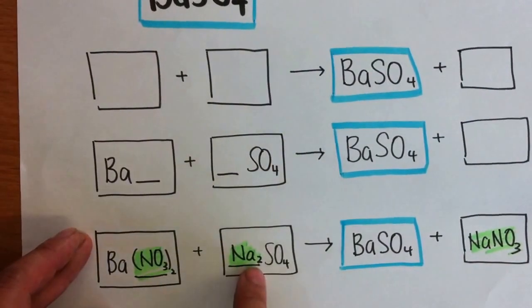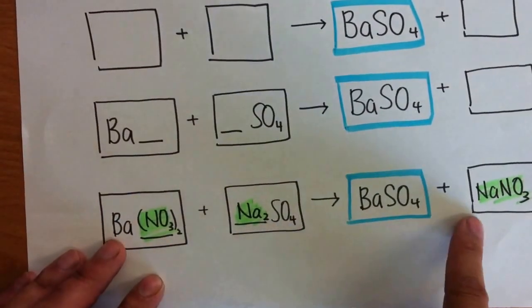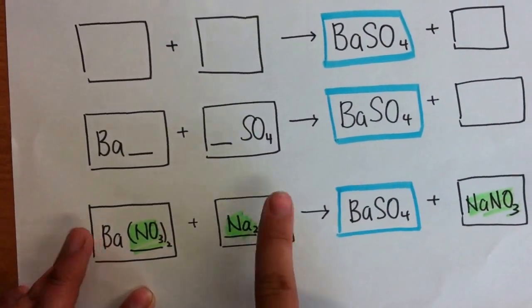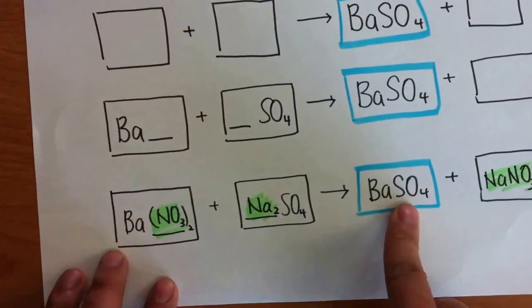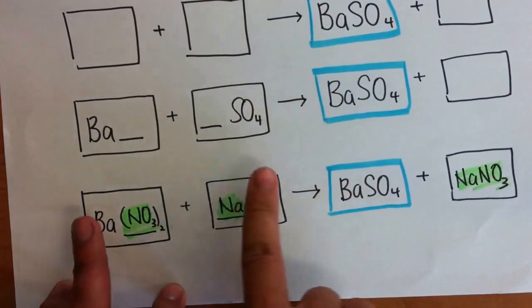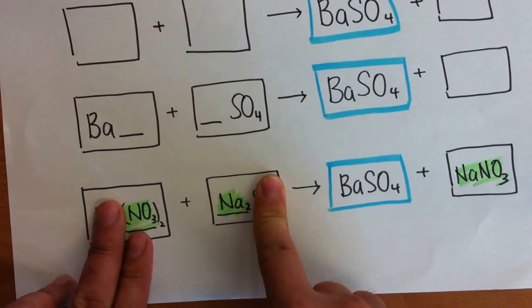Same thing. I use a group 1 again. I use a group 1 sulfate. And what do I get? Ba, BaSO4. These two combines. Give you BaSO4. What remains is Na, NO3.